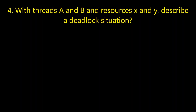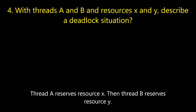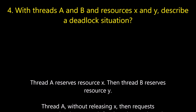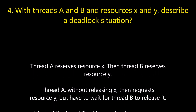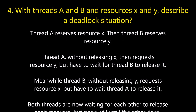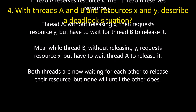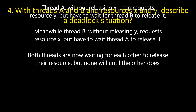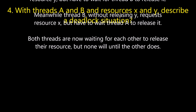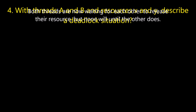Question number four: with threads A and B and resources X and Y, describe a deadlock situation. Thread A reserves resource X, then thread B reserves resource Y. Thread A, without releasing X, then requests resource Y but has to wait for thread B to release it. Meanwhile thread B, without releasing Y, requests resource X but has to wait for thread A to release it. Both threads are now waiting for each other to release their resources, but neither will until the other does.